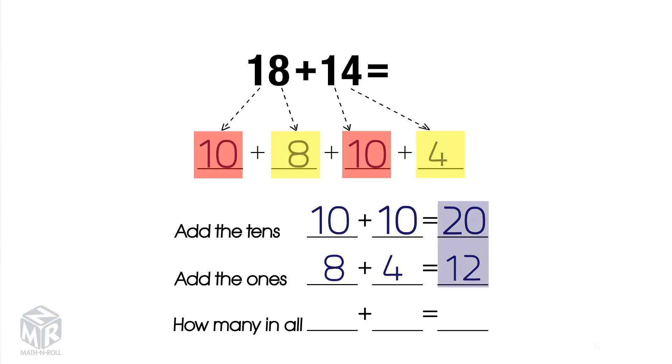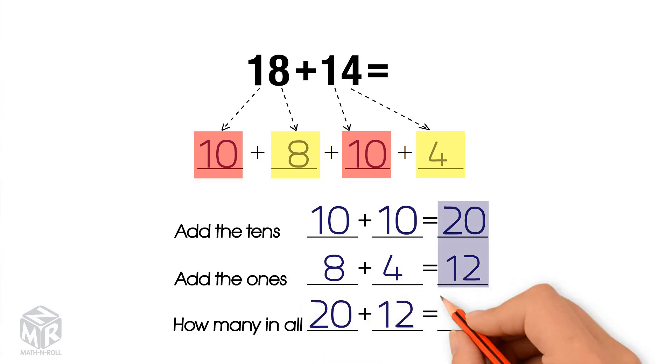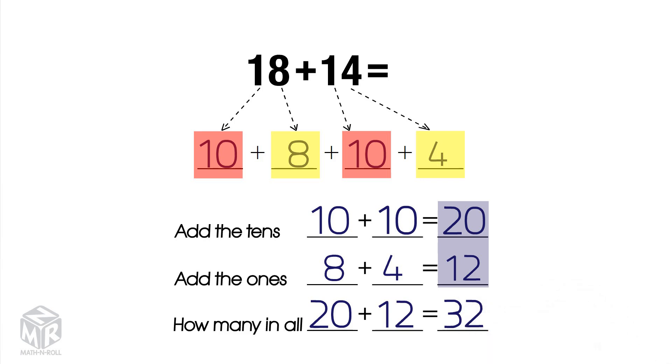Now we add them together: 20 plus 12 equals 32. So 18 plus 14 equals 32.